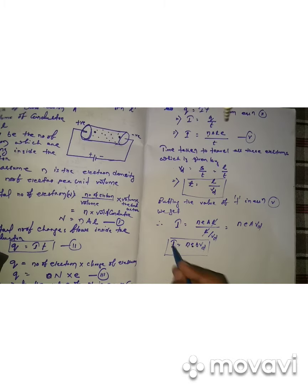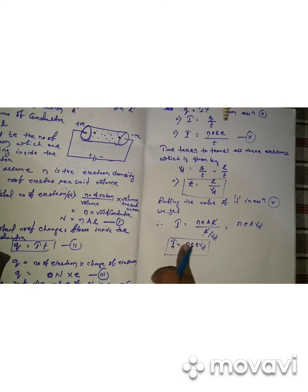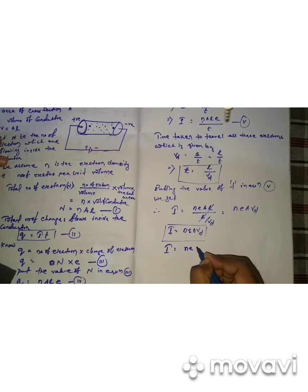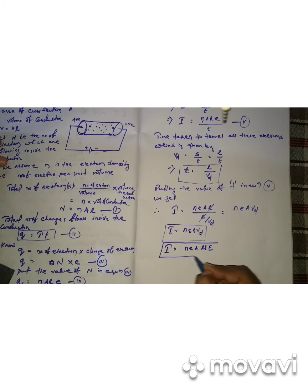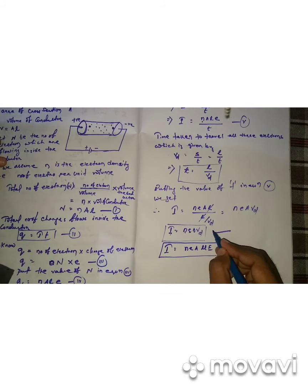So the relation between current and drift velocity is I = nAeVd. Also, you can represent this as I = nAeμE, where μ (mu) is the mobility of electrons or holes, since drift velocity Vd equals μE. So another formula for current is I = nAμE. The most important formula is I = nAeVd.